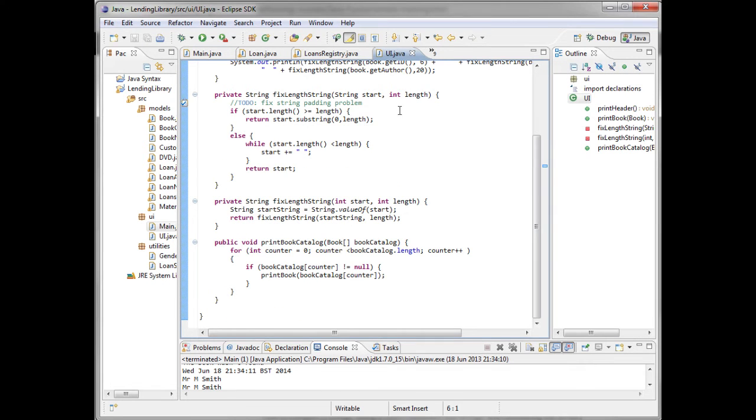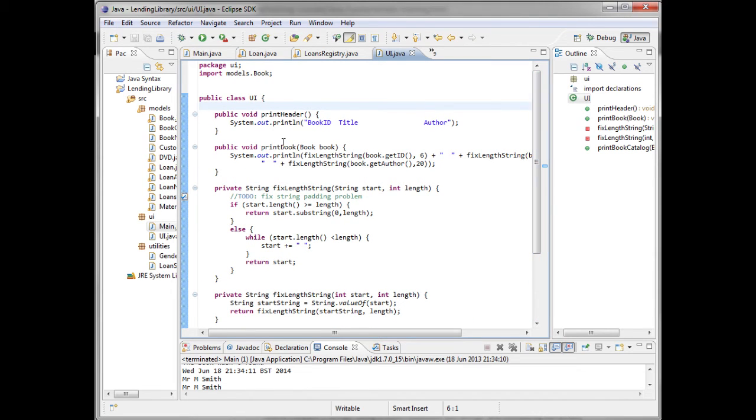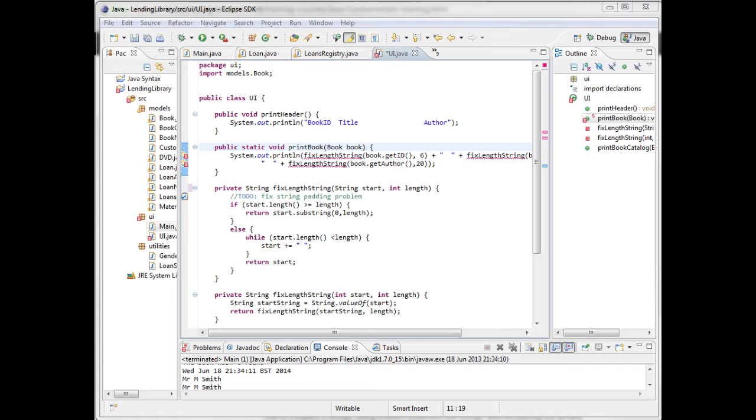So I'm going to go to my UI class that we created together and I'm going to find the print book method and I'm going to make this a static method by putting the word static in after the word public and before the word void. Now you can immediately see we've got some compile errors. That's because the print book method calls the fixed length string method and static methods can only call other methods if they are also static. So in order to get this to work, I'm going to make sure that every method that is called in the chain once we call print book is also static. There were two versions of our fixed length string method. There's this one here that takes a string and this one that takes an integer. Both versions are called by my print book method so I'll need to make both of these static as well. So I'll just do that.